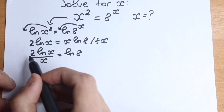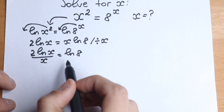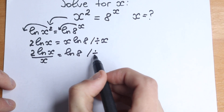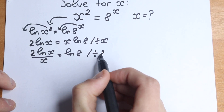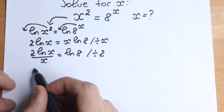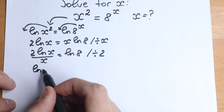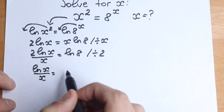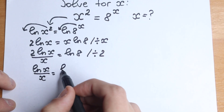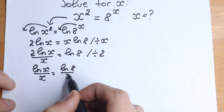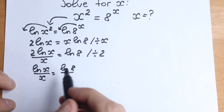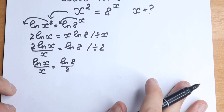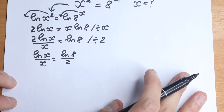We still have a 2 on the left, and we need to group constants on the right hand side. So let's divide both sides by 2. We get natural log x over x equal to natural log 8 over 2. We just cancel the 2 from the left side.